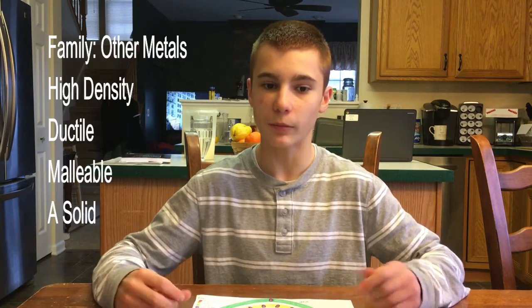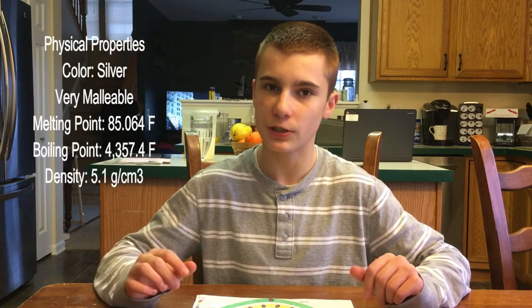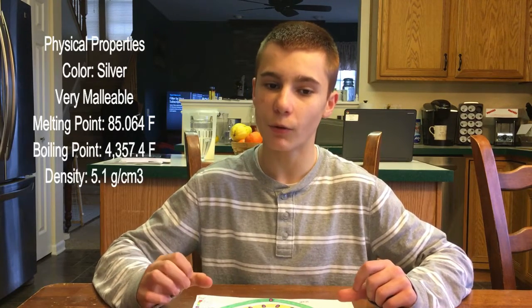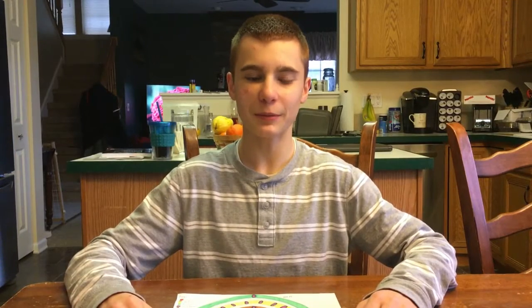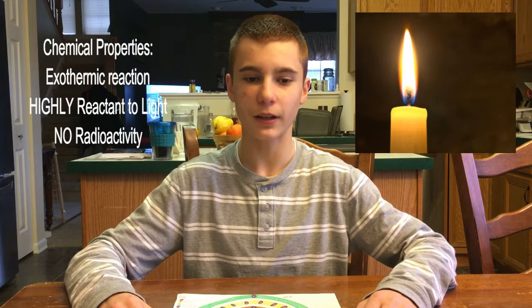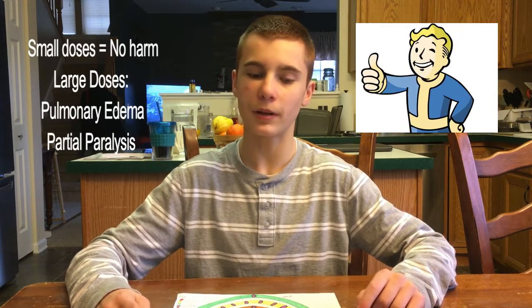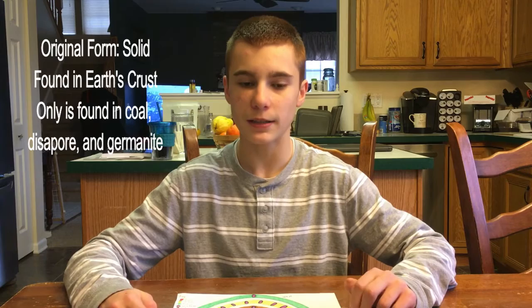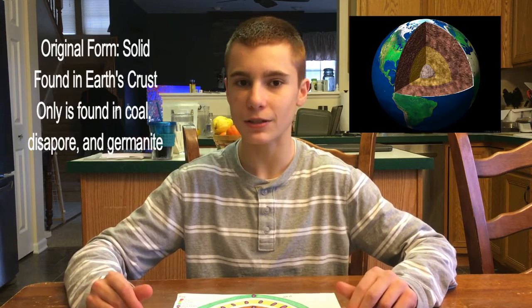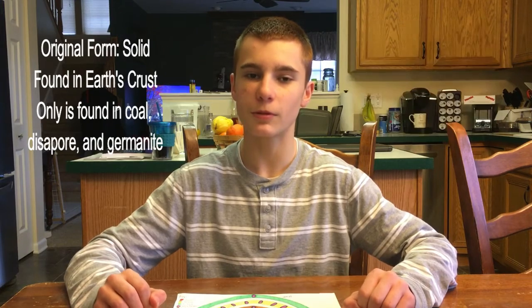Some physical properties of gallium: its color is silver, it's very malleable, its melting point is 85.604 degrees Fahrenheit, and its boiling point is 4,357.4 degrees Fahrenheit. Its density is 5.1 grams per cubic centimeter. Chemically, it's mostly used for its exothermic reaction, it's highly reactive to light but has no radioactivity. Small doses leave no harm to the body, but large doses can lead to pulmonary edema and even partial paralysis. Its solid texture is brittle, and it's found in the Earth's crust in coal, dysprose, and germanite.